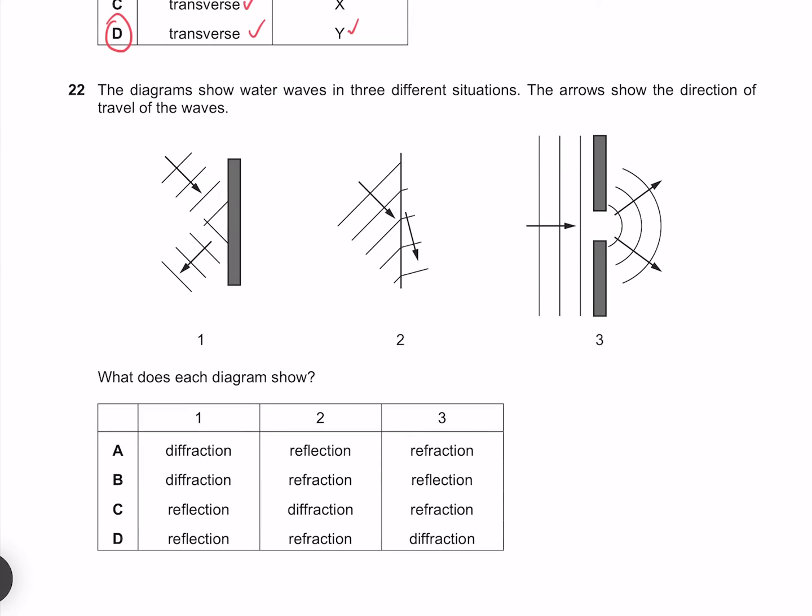The diagrams show water waves in three different situations. The arrows show the direction of travel of the waves. What does each diagram show? Our diagram 1 is depicting reflection. Diagram 2 is depicting refraction. And diagram 3 is depicting diffraction. So our answer must be D.